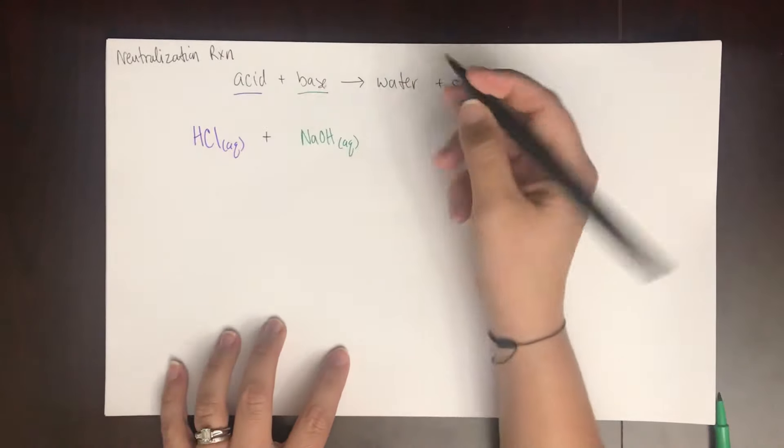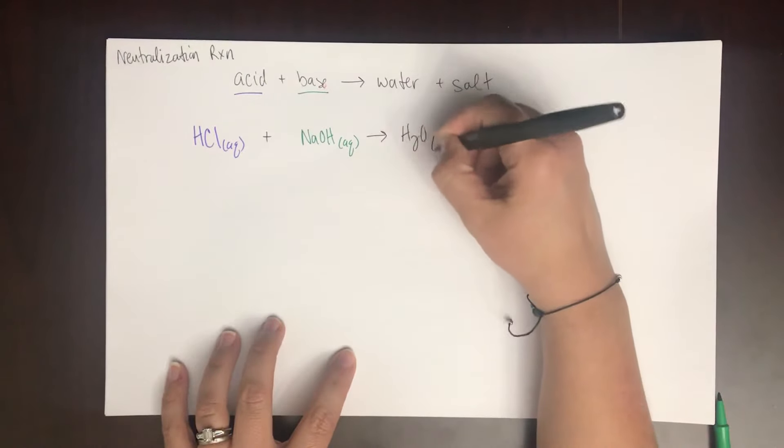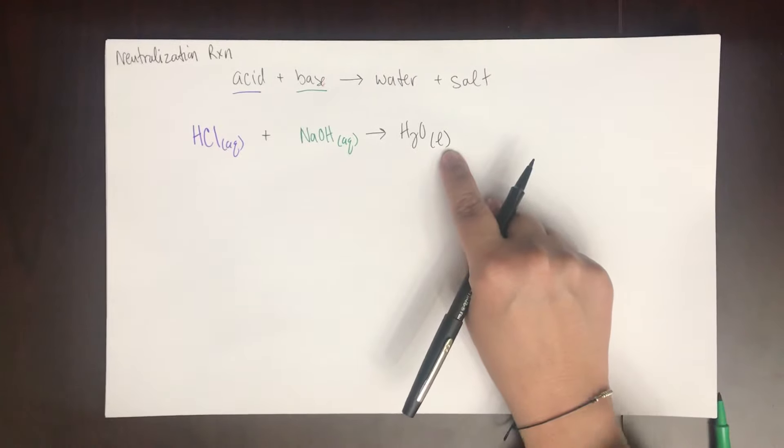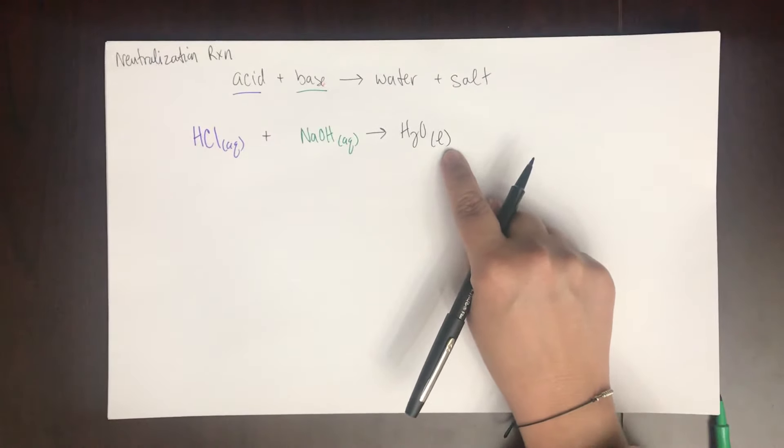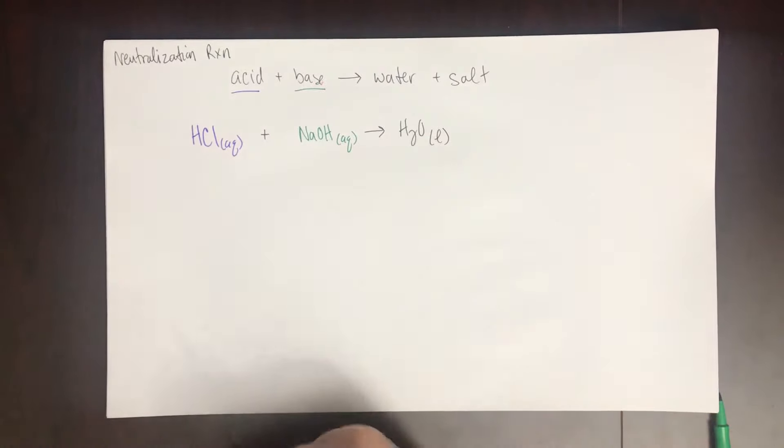So acid plus base produces water. H2O is a pure liquid. It's not aqueous. It is the solvent that aqueous things are dissolved into. But H2O itself is a liquid plus a salt.